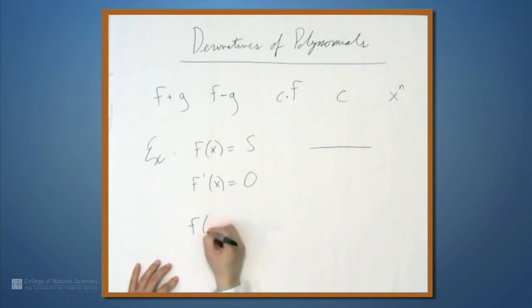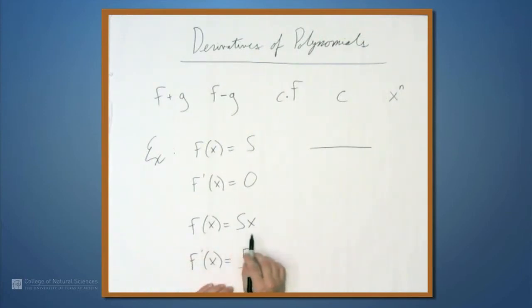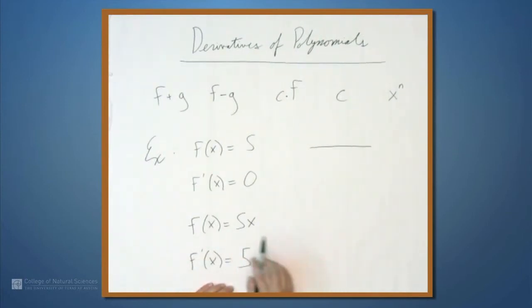What if f of x is equal to 5x? Well then f prime of x is just 5. This is also easy to see if you think of the derivative again as slope, because 5x is a line with slope 5, slope 5 everywhere, so f prime of x is going to be 5 everywhere.